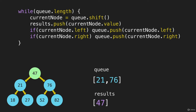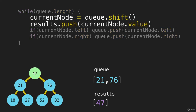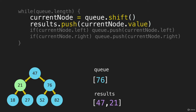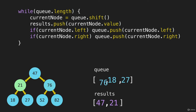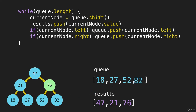Let's run through this while loop a few more times. We will shift off the 21, take that value and move it into results. Then if there is something on the left — and there is, that's the 18 — we push that into the queue. If there's something to the right, there is, we push that into the queue. The next one we remove from the queue is gonna be the 76, putting that value straight into results. There is something to the left of the 76, that's the 52, and to the right we have the 82.